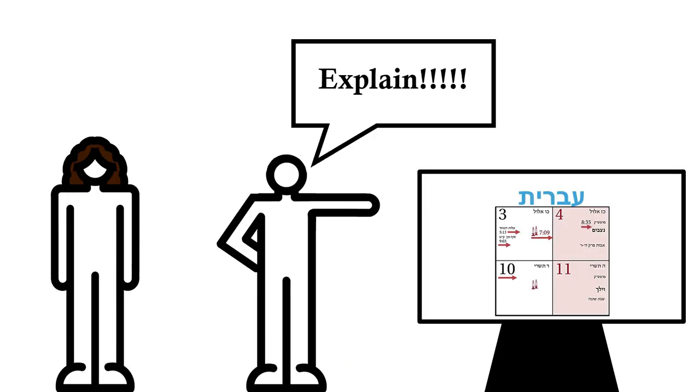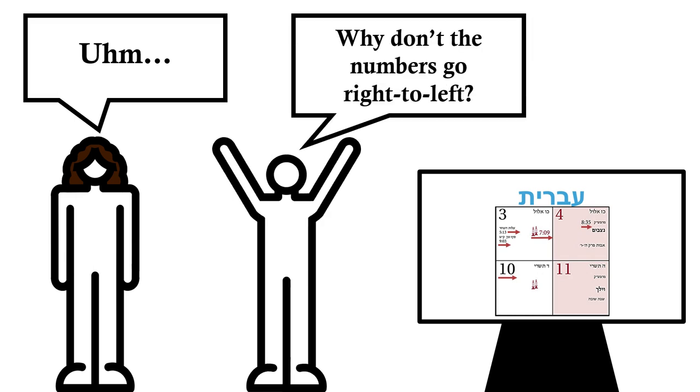I asked my friend this, and she was as puzzled as I was when I pointed it out. Why don't the numbers go right to left like the rest of the writing?